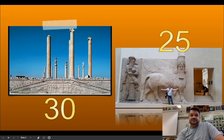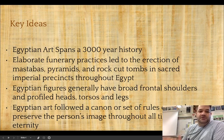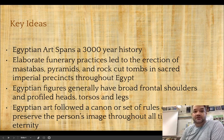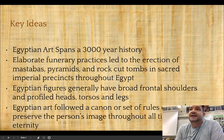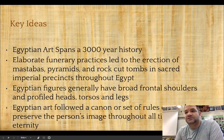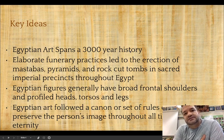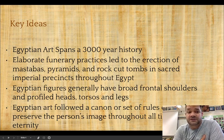Before we get started, make sure you go down and take that quiz on the two pieces from last time. Egyptian art runs a long, long time - at least 3,000 years of history. They are very old, and the reason is because they have been isolated geographically for a big chunk of their history, so they were able to just keep doing what they were doing.